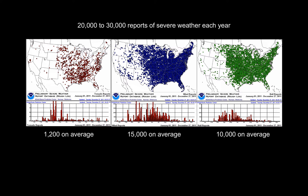Basically everywhere east of the Rocky Mountains we have a lot of severe weather reported. West of the Rockies, there aren't many people or weather stations to report it, and the Mediterranean-type climate on the west coast is more stable. The southern tip of Florida gets a lot of severe weather, but there's a hole in the data right where the Everglades are — people don't live in the swamp, so it's not reported.